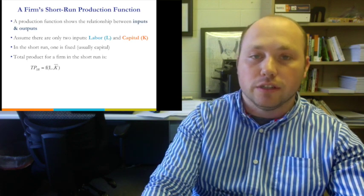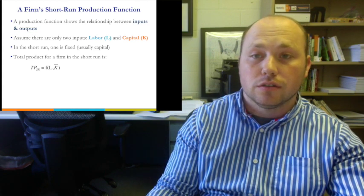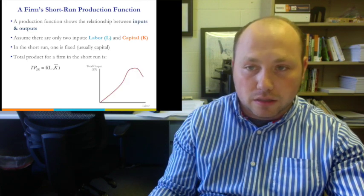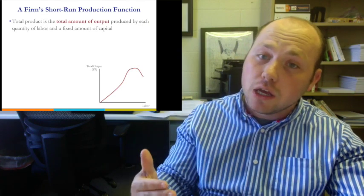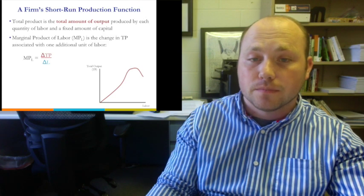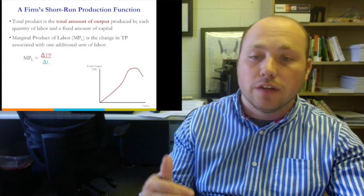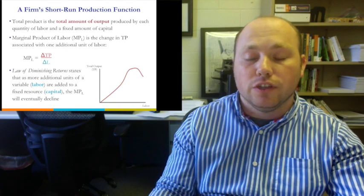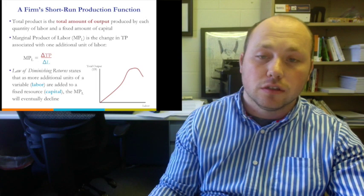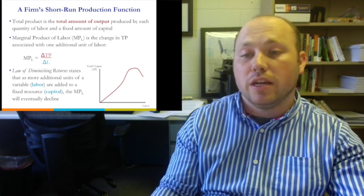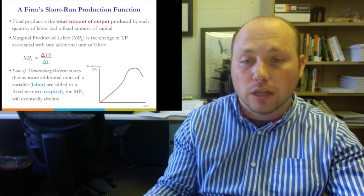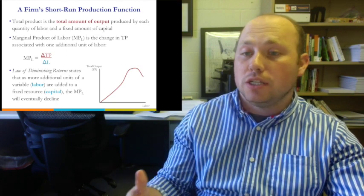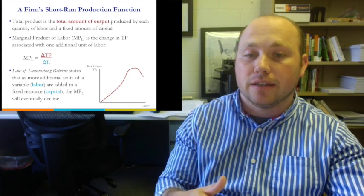The graph of total product has a curve that increases and then decreases — primarily because of diminishing returns. Total product is the total output produced by a given quantity of labor. Marginal product is how much additional output is created when we add one additional unit of labor. The law of diminishing returns states that as we add an additional unit of a variable input (labor) to a fixed resource (capital), the marginal product of labor will eventually decline.